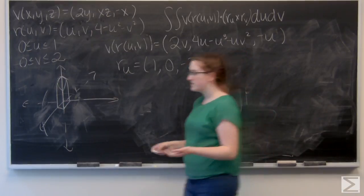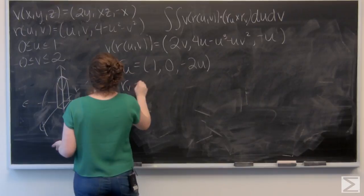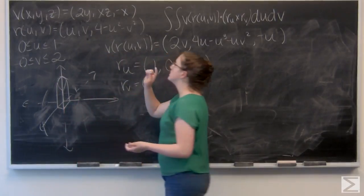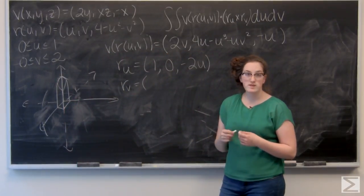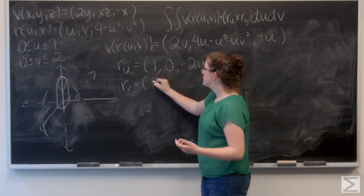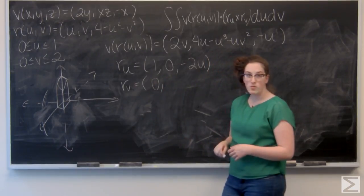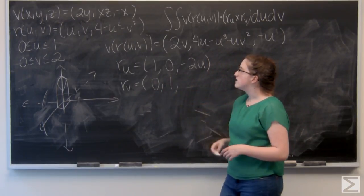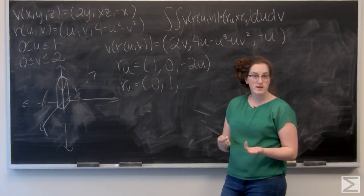Now let's do r_v. So, the partial derivative of u is going to be 0, because u is treated like a constant. The partial derivative of v is going to be 1. And the partial derivative of the third component is going to be negative 2v.